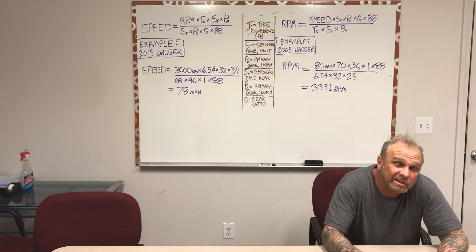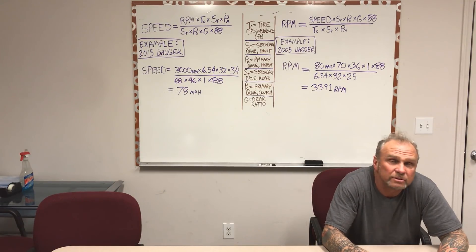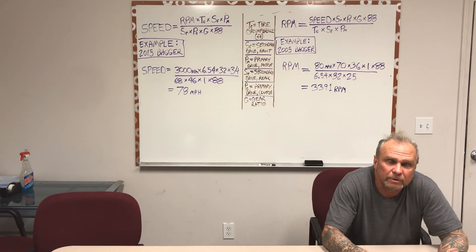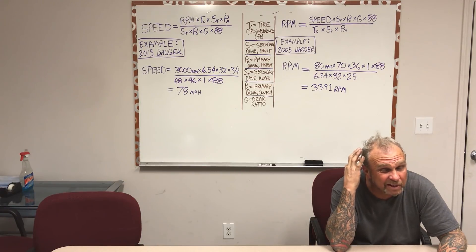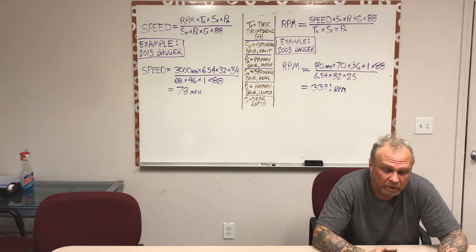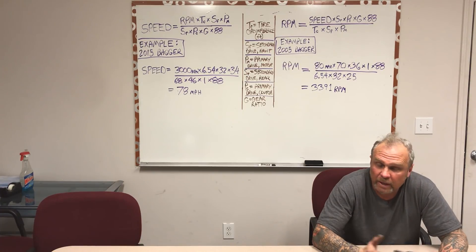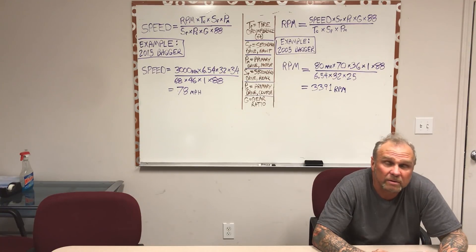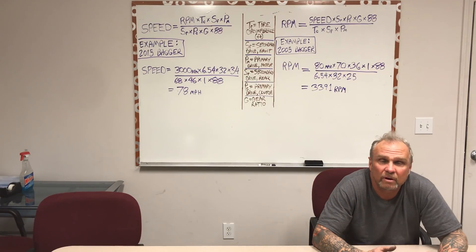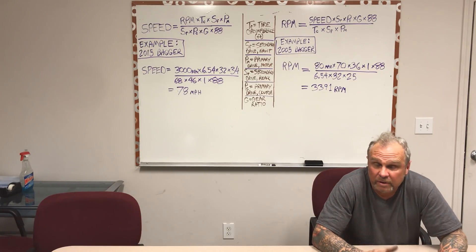20 years ago when I started, I looked around for equations to help me describe to people what the primary drive, the secondary drive, and the transmission does to your RPM. I couldn't find any at that time, so I derived the equations you see behind me on the upper left and upper right of the dry erase board. These work well and they comprehend all the significant variables involved in deriving RPM and speed for a given motorcycle.